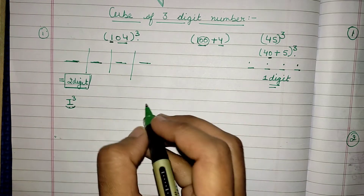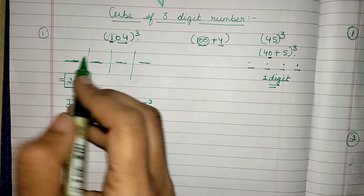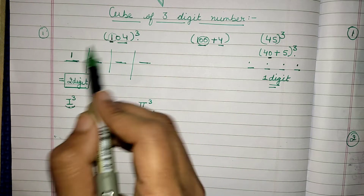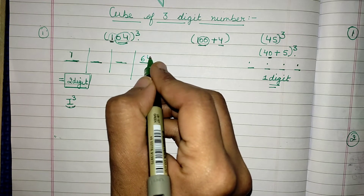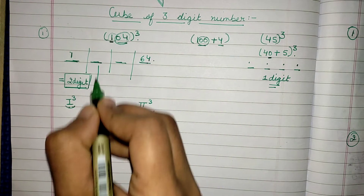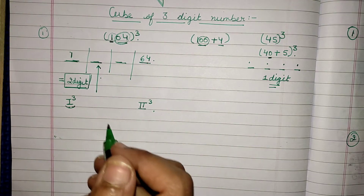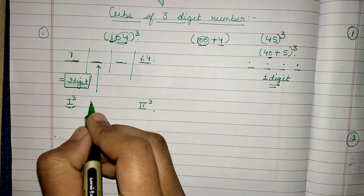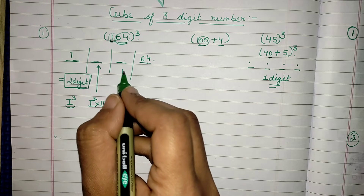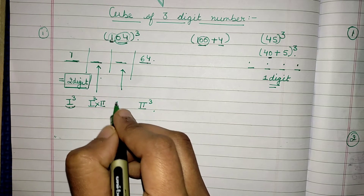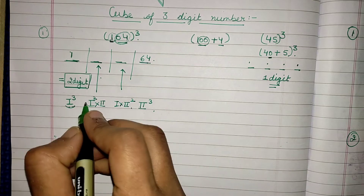Our next step is the same as before: cube of the first number and cube of the second number. Cube of 1 is 1, and cube of 4 is 64. For the middle parts, using Trick 1, we do: square of the first number times the second, and the first number times the square of the second.